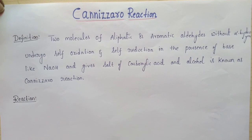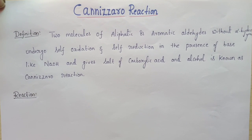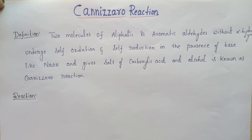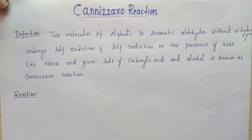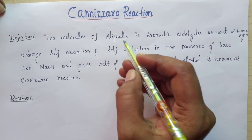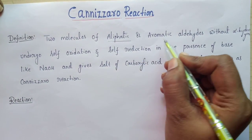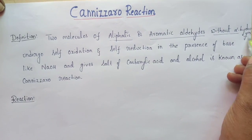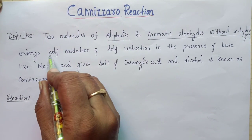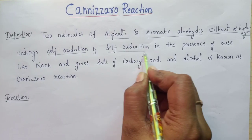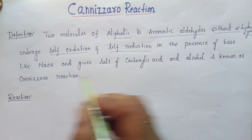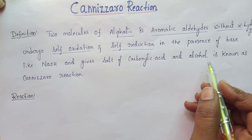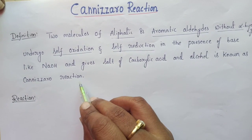Hi everyone, in this video I would like to explain about the Cannizzaro reaction. It is one of the important named reactions under carbonyl compounds. Two molecules of aliphatic or aromatic aldehydes without alpha hydrogens undergo either self-oxidation or self-reduction in the presence of a base like NaOH, giving a salt of carboxylic acid and an alcohol — this is known as the Cannizzaro reaction.